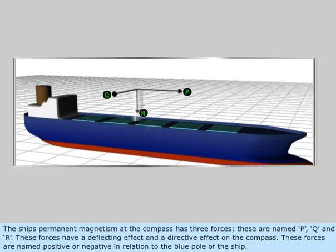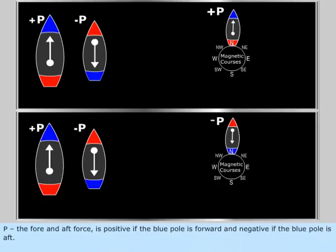The ship's permanent magnetism at the compass has three forces: P, Q, and R. These forces have a deflecting effect and a directive effect on the compass. These forces are named positive or negative in relation to the blue pole of the ship.